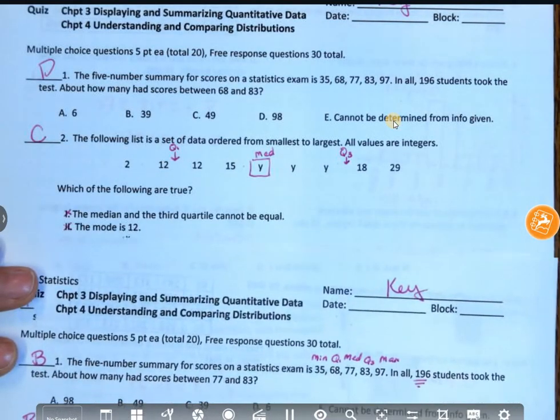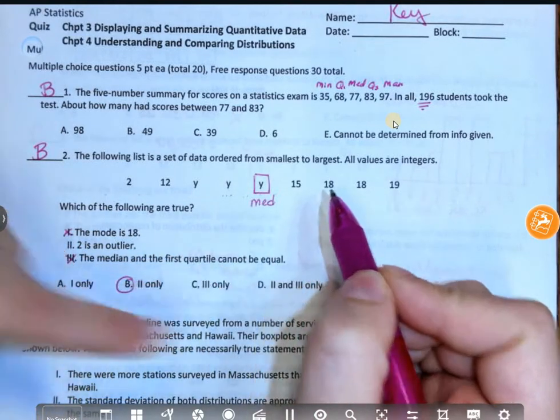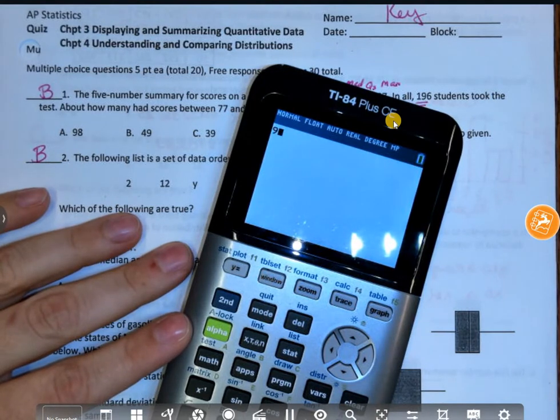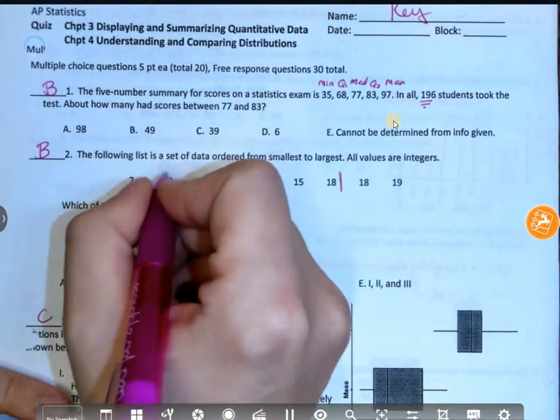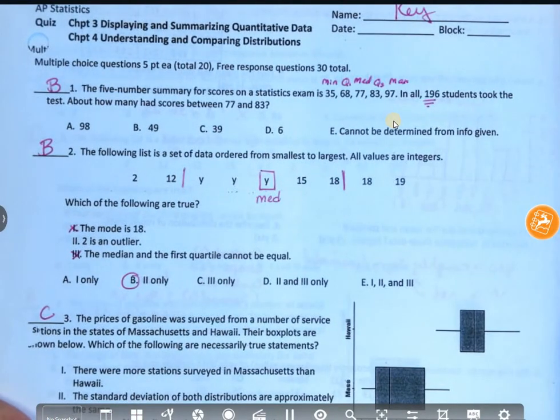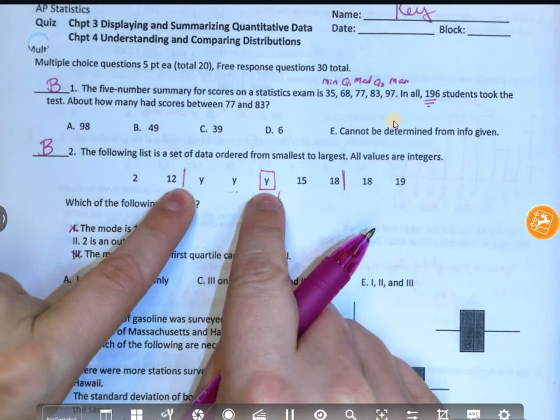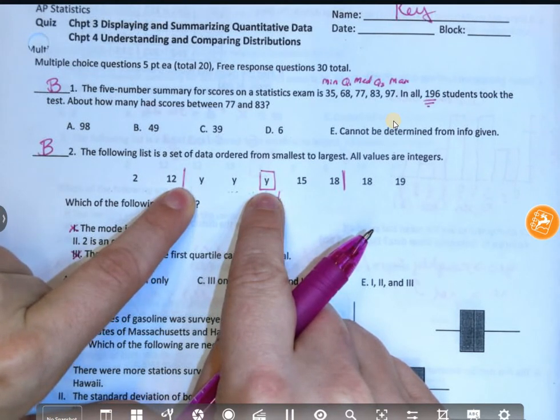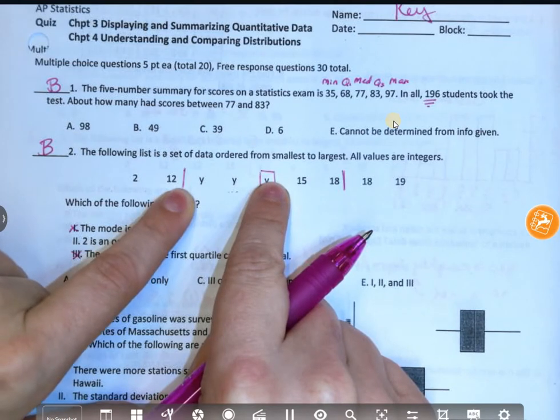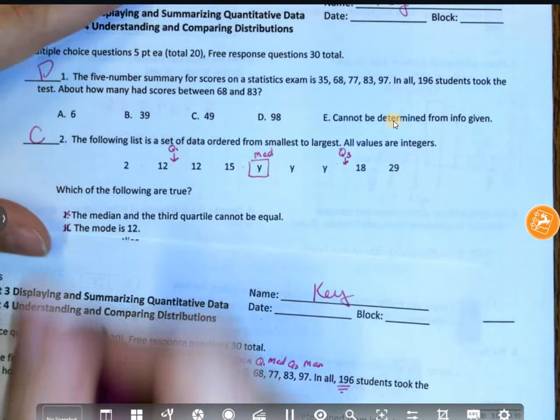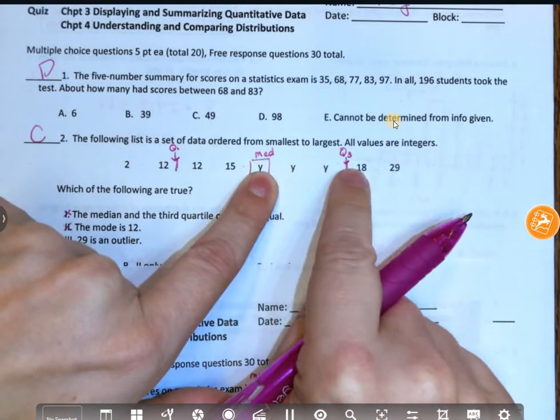Then each of them say the median and third quartile cannot be equal. Here's the median. The quartile, I have nine things. So if I do 9 times 0.25, that means I should have 2.25 in each quartile. So that means my quartile would go here. That means my quartile would go here. So it says the median and first quartile cannot be equal. Is it possible for these to be the same? Yeah. All I've got here is that they're ordered from smallest to largest. These could all be 12.